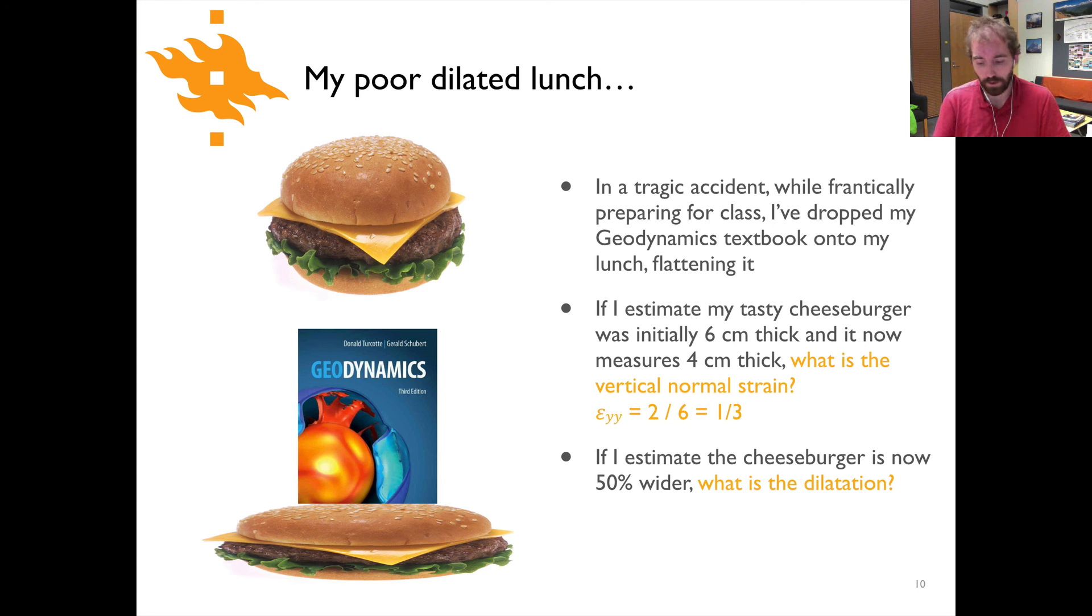Okay so let's see what you've come up with. All we have to do to calculate dilatation in this case is simply sum up the normal strains along the three different axes of this three-dimensional cheeseburger. If it's 50% wider that's going to represent a negative strain of one-half so you should get something that is minus one-half for the x-axis plus one-third for what happened with the shortening along the y-axis and then minus one-half along the z-axis or a total dilatation of minus two-thirds. So in spite of this horrible thing happening to my cheeseburger, it's actually increased in volume.